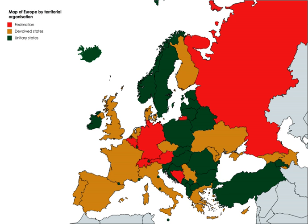Federalism in the Kingdom of Belgium is an evolving system. Belgian federalism is a twin system which reflects both the linguistic communities of the country — French (ca. 40%), Dutch (ca. 59%), and to a much lesser extent German (ca. 1%) — and the geographically defined regions: Brussels Capital, Flanders and Wallonia. In Brussels, ca. 80% of the population speaks French and ca. 20% Dutch, with the city being an enclave of the Flemish region and officially a bilingual area.